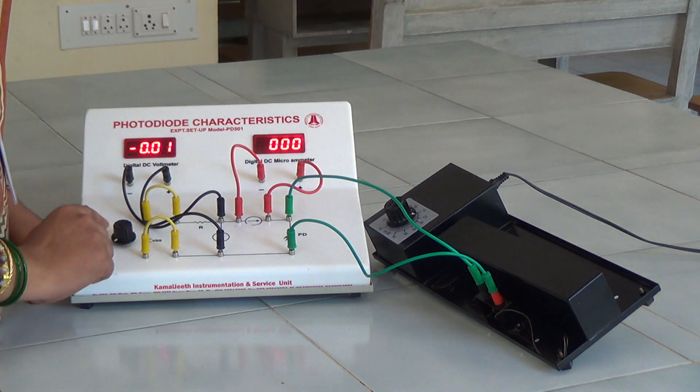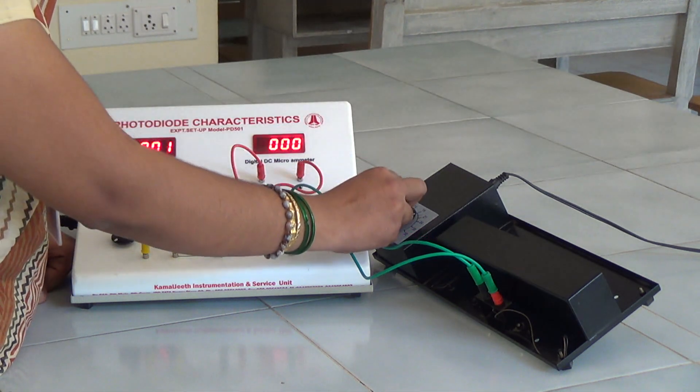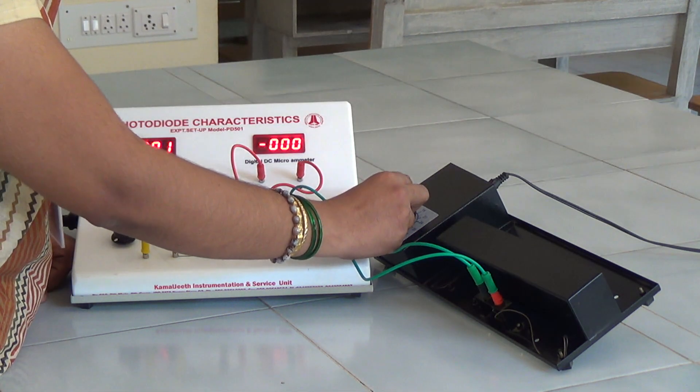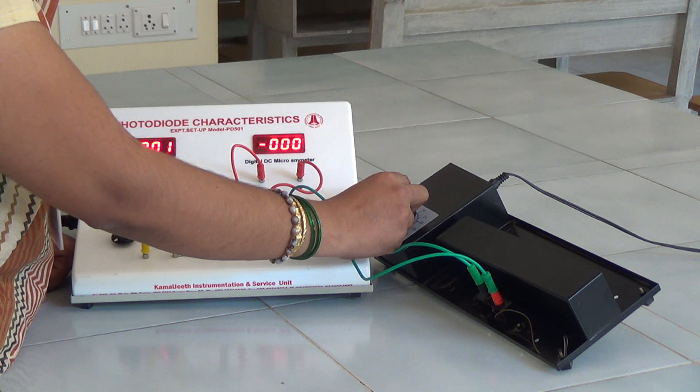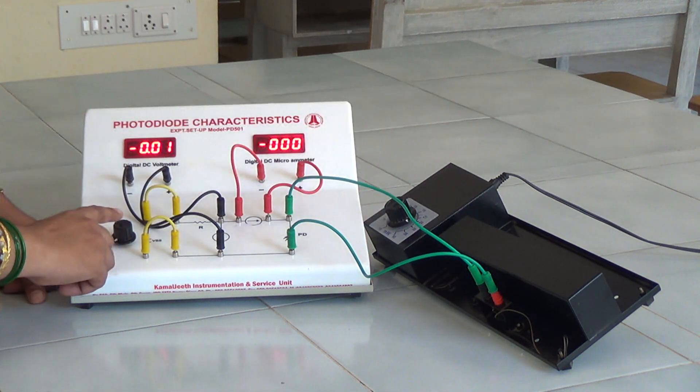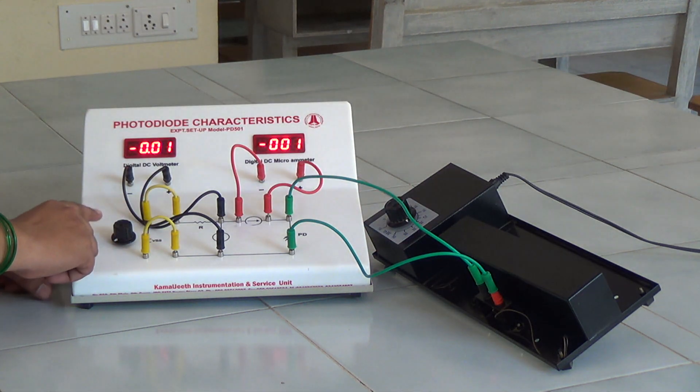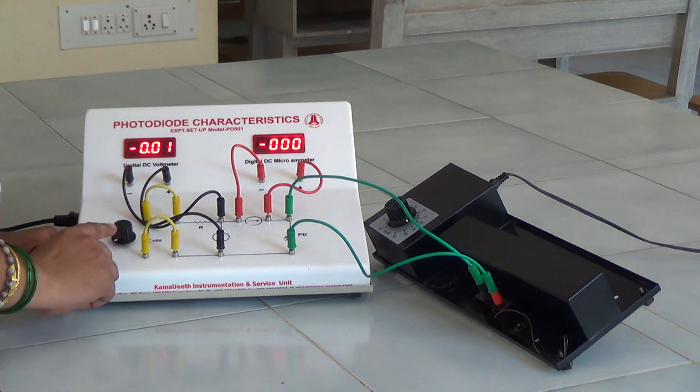And the next trial that we repeat is that we set the intensity of the LED to 30 milliwatts. And the experiment is repeated for the same set of voltages that we have done previously.